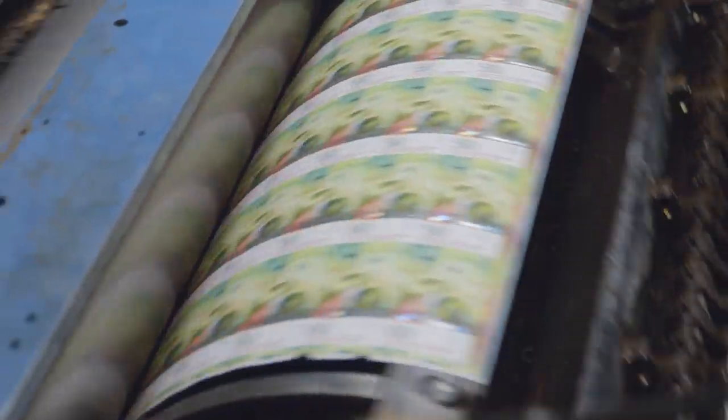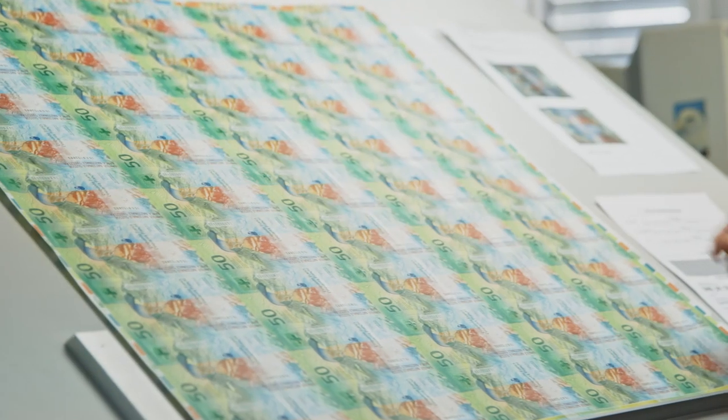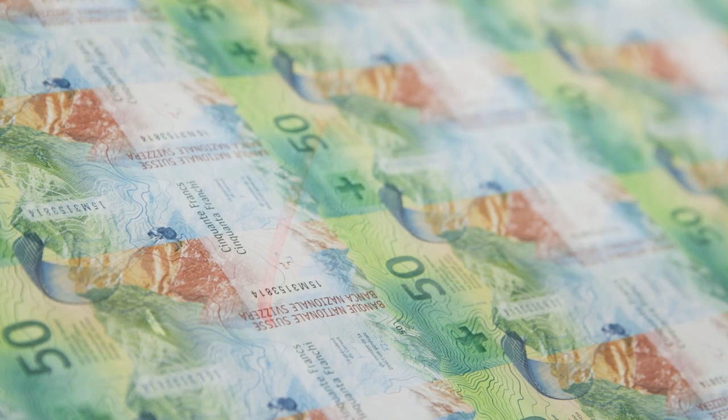Varnishing is the last stage in the printing process. Each side of the note is coated in a thin layer of varnish, giving it a matte finish. The varnish protects the finished product against soiling and makes it more durable.